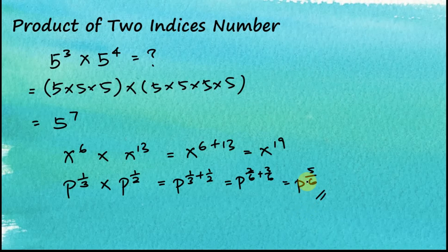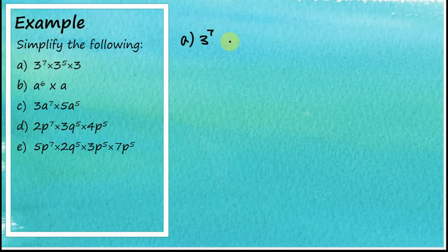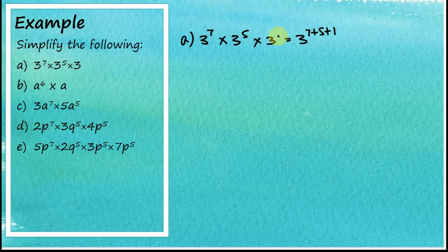That equals p to the power of 5 over 6. This is how we find the product of two index numbers. Now let's simplify some examples. Starting with (a): 3 to the power of 7 times 3 to the power of 5 times 3 equals 3 to the power of 7 plus 5 plus 1, since when the index is not written it means it's 1.